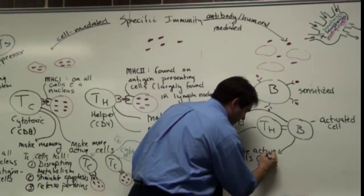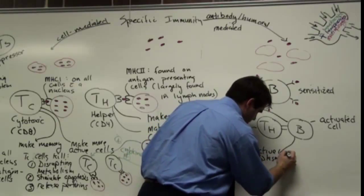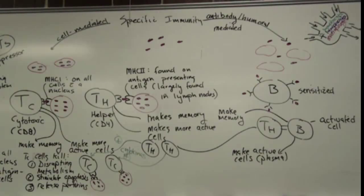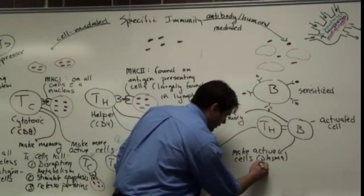And it'll make active cells. In this case, they kind of change their shape considerably so they're called something else. They're called plasma cells. And those plasma cells will start making antibodies.